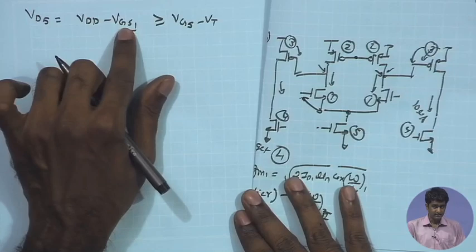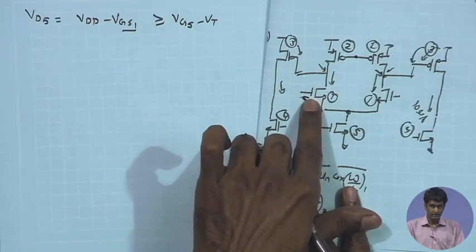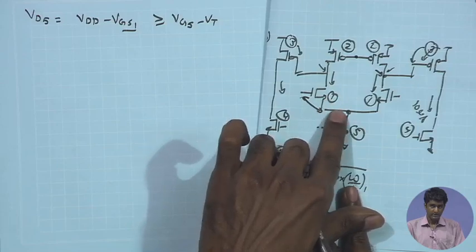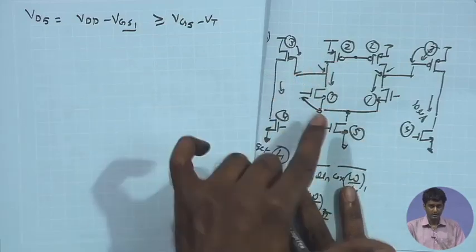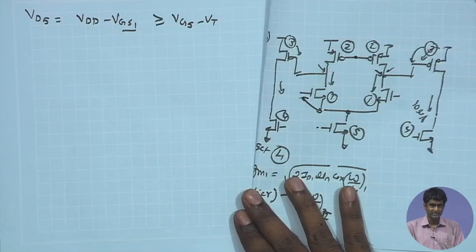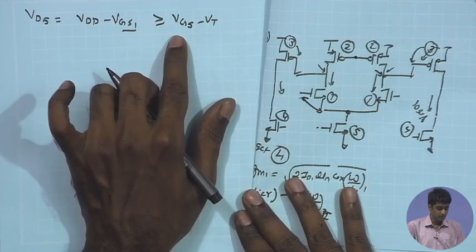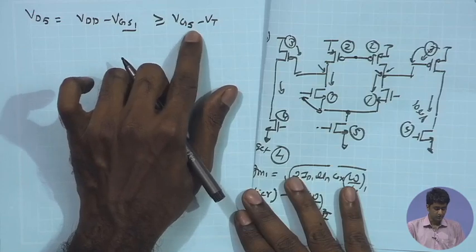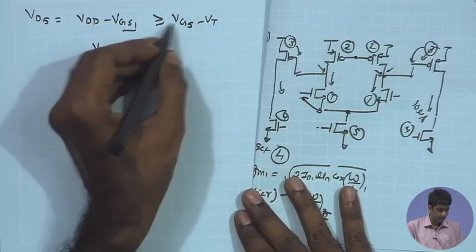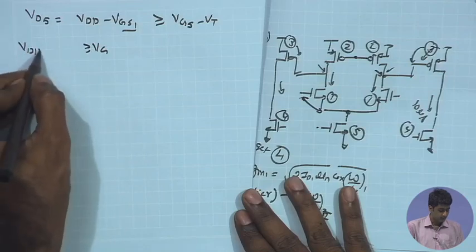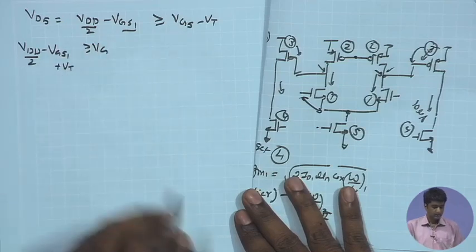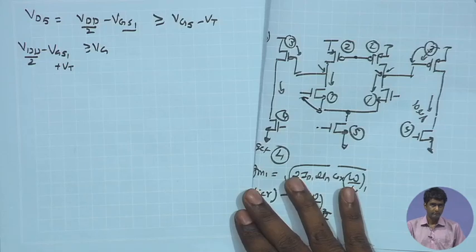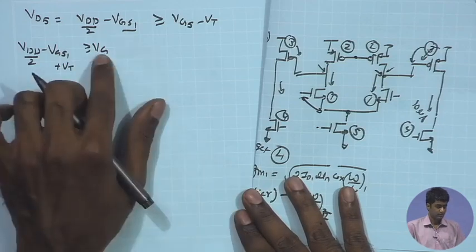VD5 must be greater than or equal to VG5 minus Vt in order to satisfy the saturation condition. Now, if we have already determined the W/L of M1 and also the bias current, we have VGS1 known. VGS1 becomes a parameter known from the prior set values of W/L and ID of the input devices. From here I can get the constraint on VG5.